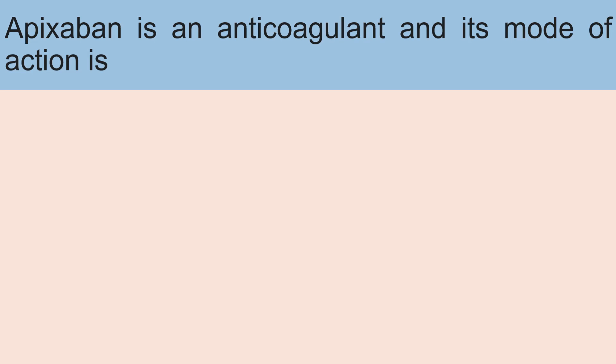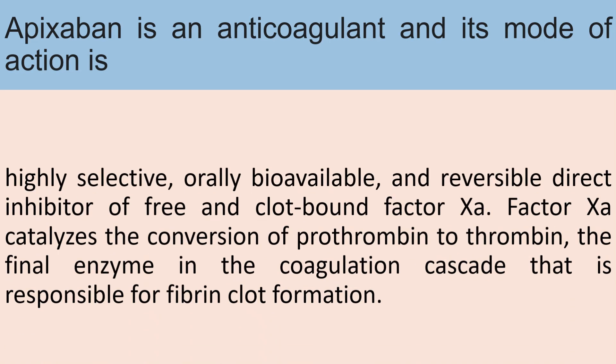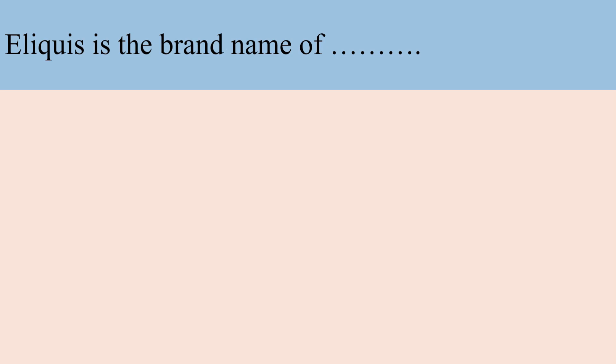Next question: Apixaban is an anti-coagulant. Its mode of action is: highly selective, orally bioavailable, and reversible direct inhibitor of free and clot-bound factor 10a. Factor 10a catalyzes the conversion of prothrombin to thrombin, the final enzyme in the coagulation cascade responsible for fibrin clot formation. Eliquis is the brand name of apixaban. FDA has recently given a note to use Eliquis as an anti-coagulant.